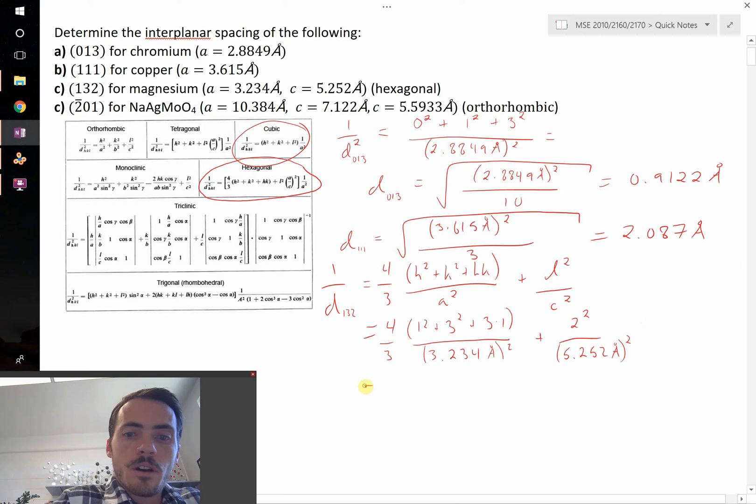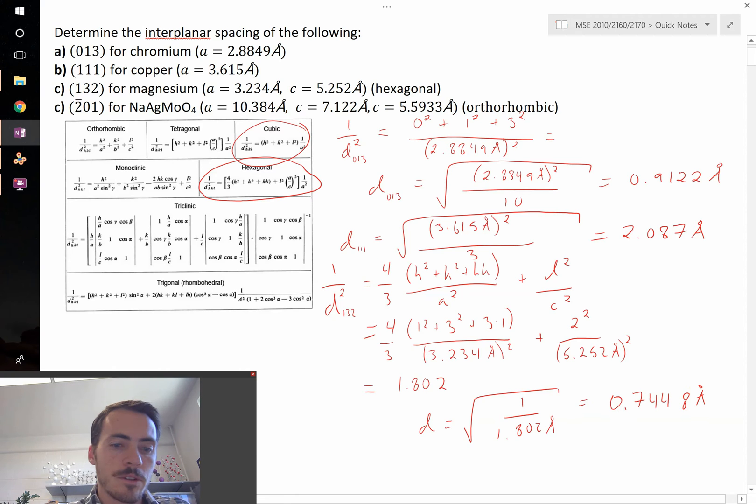Punching all that in, this is 1 over D squared, that's equal to 1.802. So now solving for D, D is going to be equal to 1 over square root of 1.802, which I get as 0.745 angstroms.